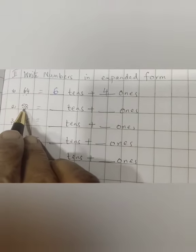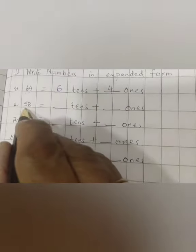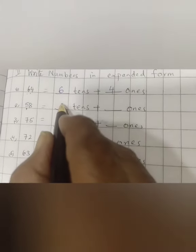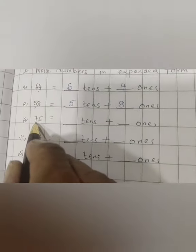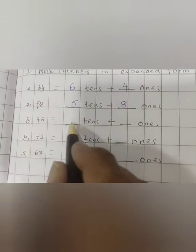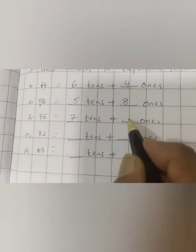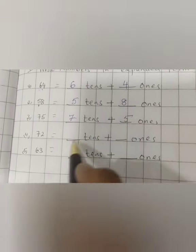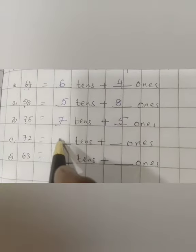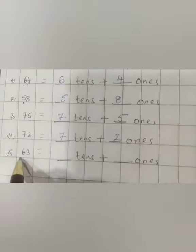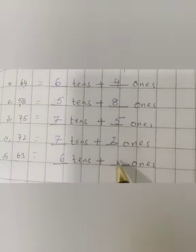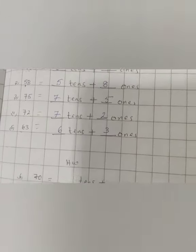75. 7 is in tens place and 5 is in ones place. 72. 7 tens and 2 ones. 63. 6 tens and 3 ones. And these 5 sums are for your homework.